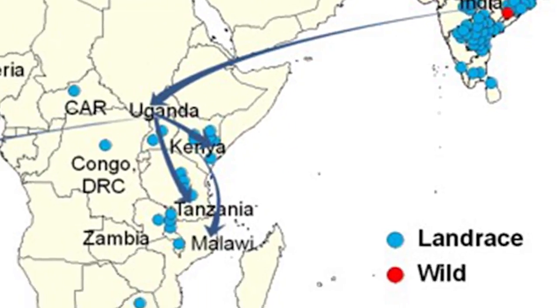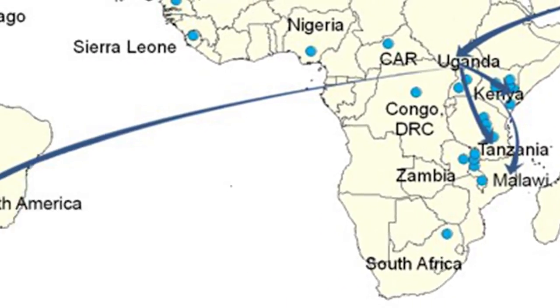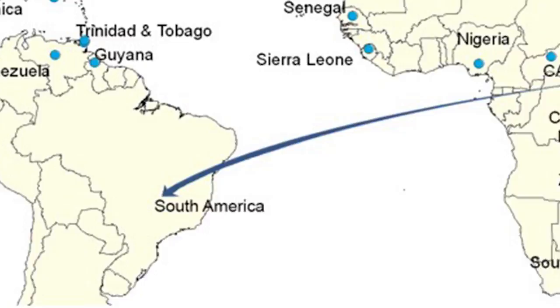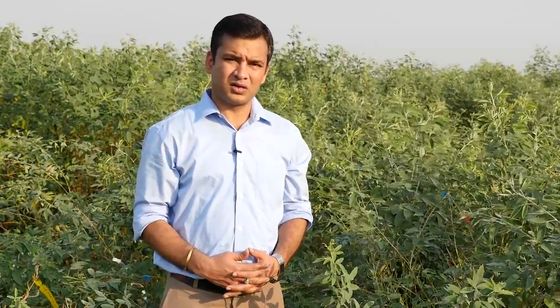This study has provided information on the migration of pigeon pea from India to Eastern Africa, and from Eastern Africa to the Americas. This migration basically happened because of the slave trade, which was the main reason for the migration of pigeon pea from India to outside of the world.